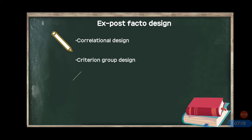Next comes correlational design. It is very simple. When we want to see the relationship between two variables, we use correlational design. Suppose we take a group of children and want to test the correlation between intelligence and problem-solving ability, or intelligence and adjustment. We give students an intelligence test and then a test of adjustment, and we compare them using a correlational method.